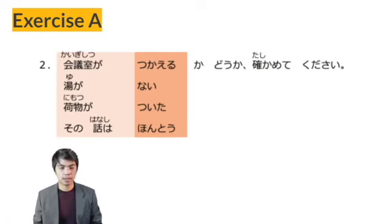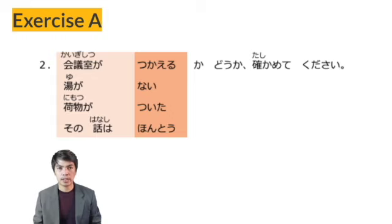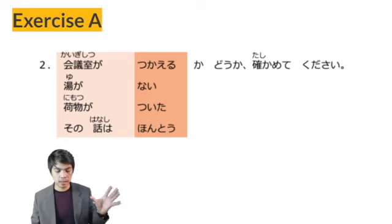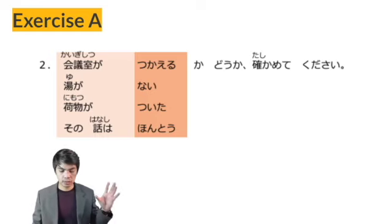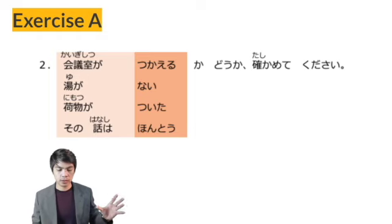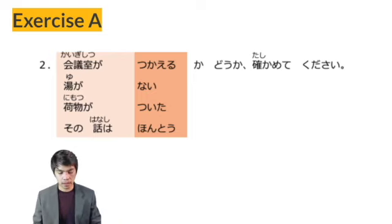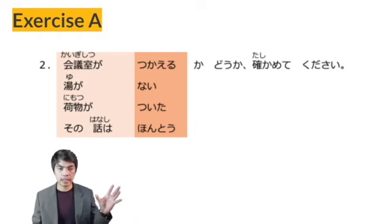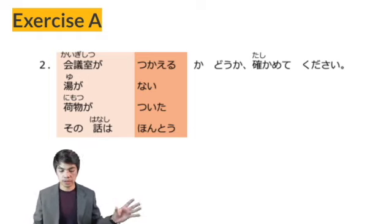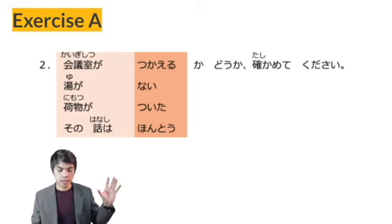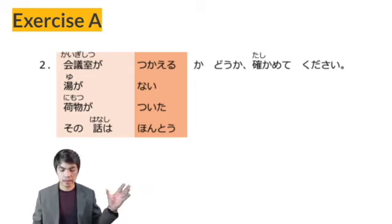Let's proceed to number 2. These are questions without interrogatives. Kaigishitsu ga tsukaeru ka dou ka, tashikamete kudasai — please confirm whether the meeting room can be used or not. Yu ga nai ka dou ka, tashikamete kudasai — please confirm whether there is hot water or not.